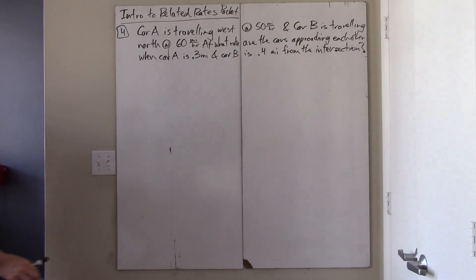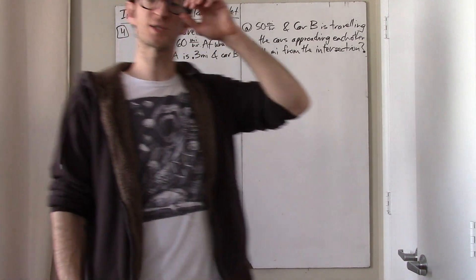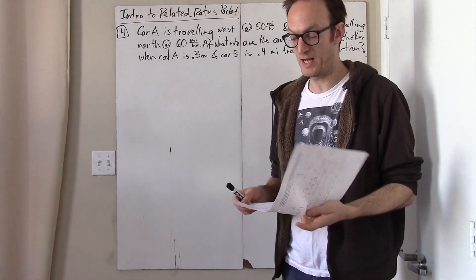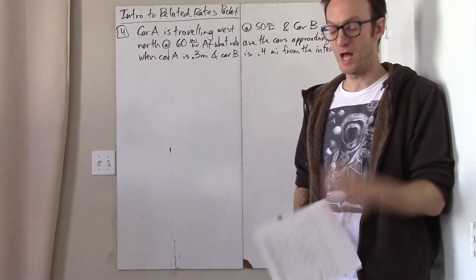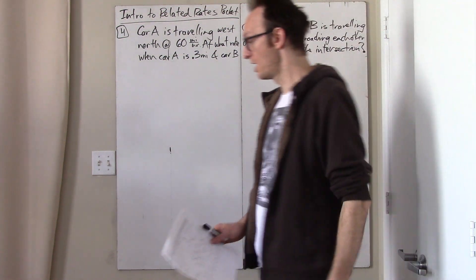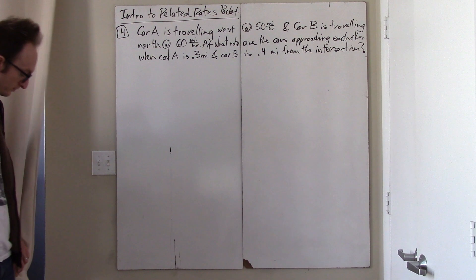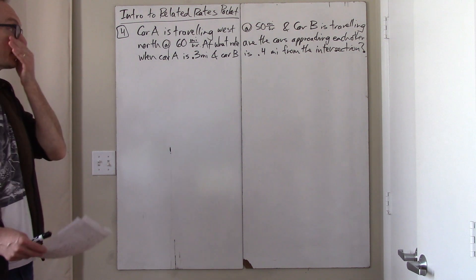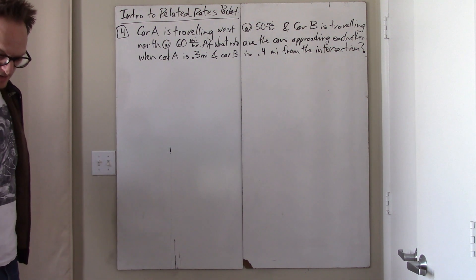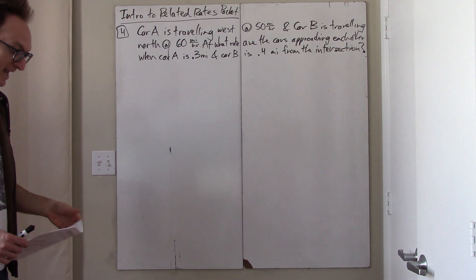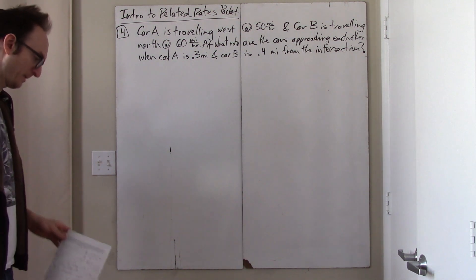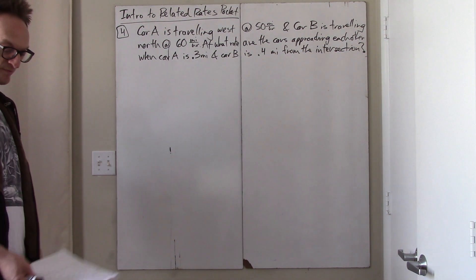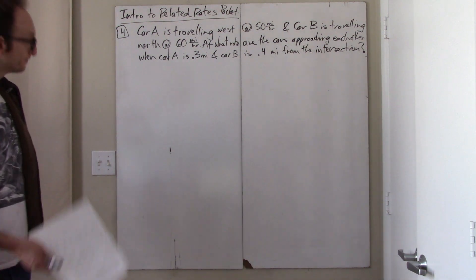Welcome back. In the video from five years ago about the introduction to related rates, there was a packet called 'Introduction to Related Rates,' and we did the first three prompts together. So there were two prompts left — page three and page four. I can post the answer key, but I'm going to make a video right now where we just do them. This will be problem four and problem five, so pages three and four from this packet.